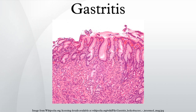Over-the-counter antacids in liquid or tablet form are a common treatment for mild gastritis. Antacids neutralize stomach acid and can provide fast pain relief. When antacids do not provide enough relief, medications such as cimetidine, ranitidine, nisatidine, or famotidine that help reduce the amount of acid the stomach produces are often prescribed.